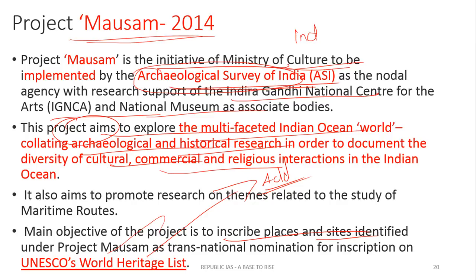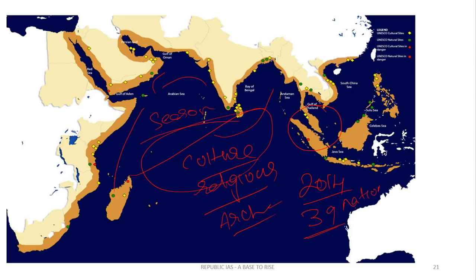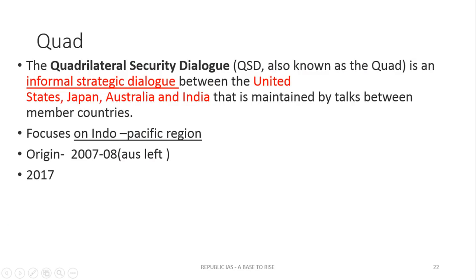Project Mausam was initiated in 2014. Nearly 39 nations have been identified under this project, including Southeast Asian nations, Gulf nations, and the eastern part of Africa. The name 'Mausam' comes from the Arabic/seasonal monsoon connection, reflecting the historical ties India had with Indian Ocean nations through monsoon-based trade routes.